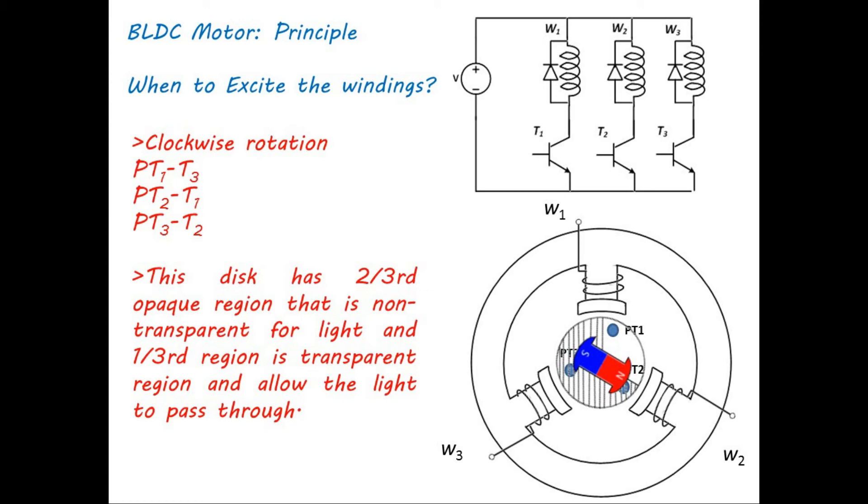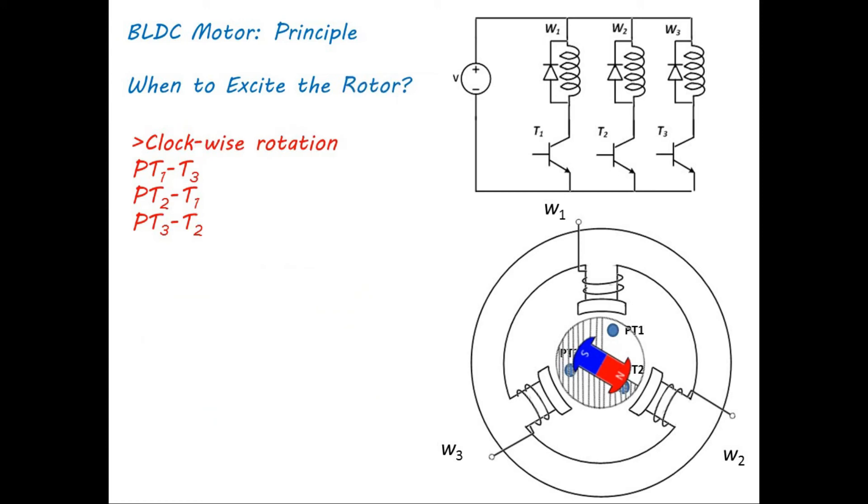This rotation makes PT3 turn off because PT3 is now covered by opaque region. In the present situation, now PT1 encounters transparent region and allows the light to pass through it. As a result, PT1 turns on and it makes transistor T3 to be turned on. Hence, winding W3 is excited and rotor further rotates 120 degrees.